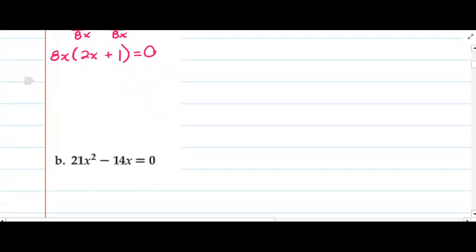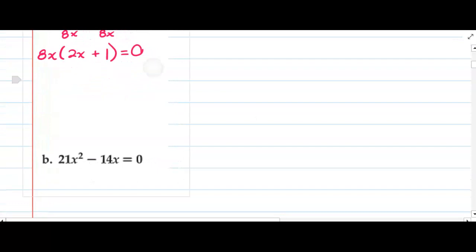To solve by factoring, we are simply going to set each side equal to 0 and solve.